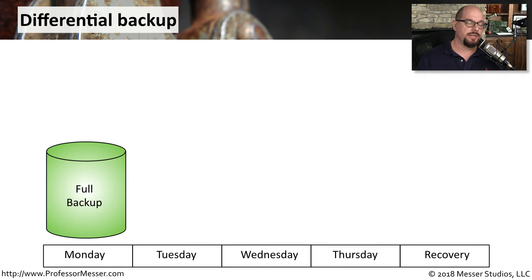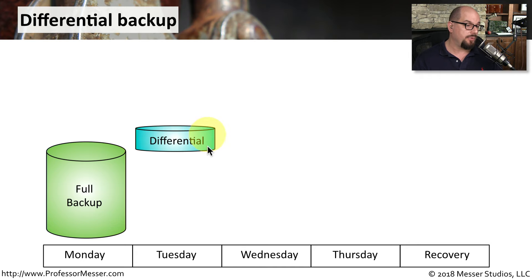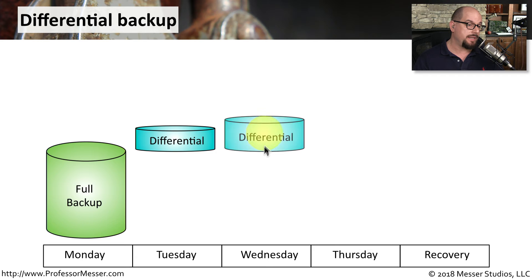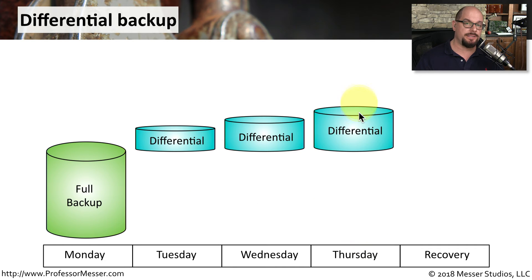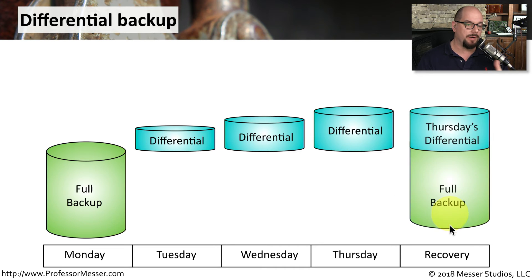A differential backup works a little bit differently. We do start with the same full backup as with the incremental backup. Then on Tuesday, we create a differential backup of anything that may have changed since the full backup. On Wednesday, we create another differential backup that is also everything that has changed since the full backup. Thursday is the same — a differential backup of all files changed since the full backup. Whenever we need to perform a recovery, we only need the last full backup and the last differential backup that was created.